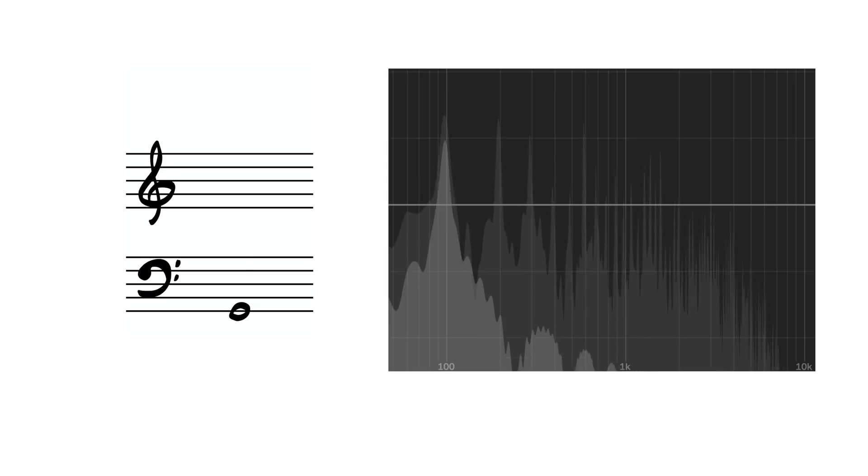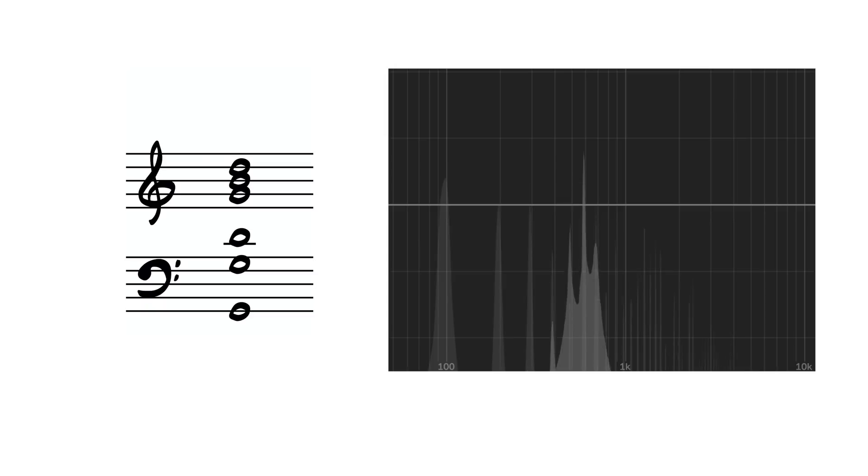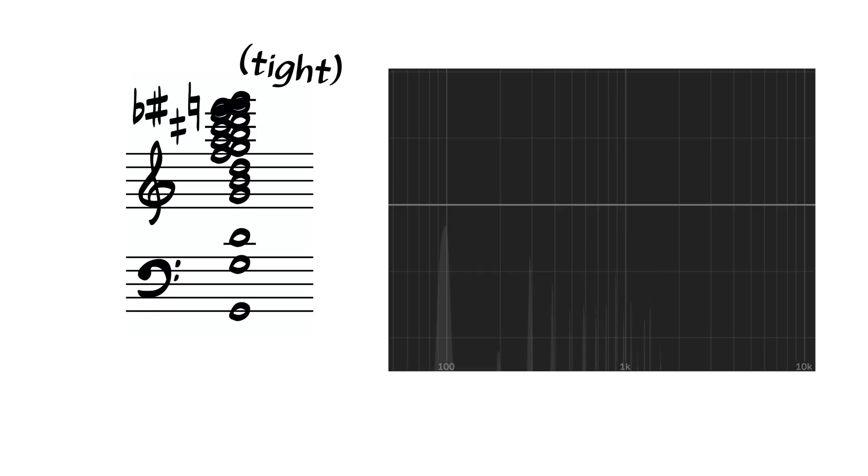As you keep going up the harmonic series, the distances between harmonics get smaller and smaller. So high harmonics are bunched together in these tight clusters, whereas the lower harmonics are more widely spread out.